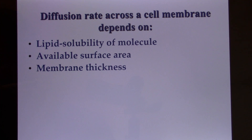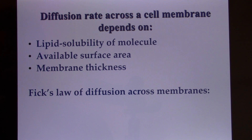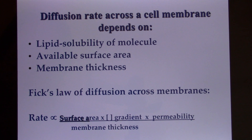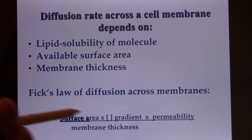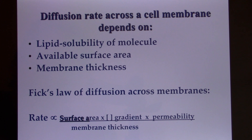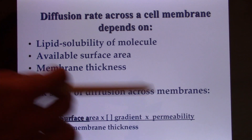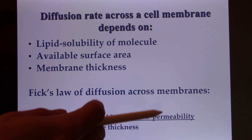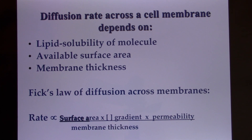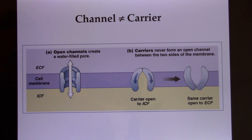Diffusion depends on lipid solubility, surface area, membrane thickness, and concentration gradient. We summarize this as Fick's Law: diffusion rate depends on — in the numerator — surface area (bigger is better), concentration gradient (bigger is better), and permeability (lipid-soluble molecules have increased permeability; opening ion channels also increases permeability). The denominator is membrane thickness — increased thickness worsens diffusion.